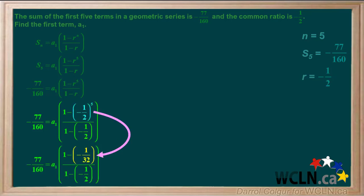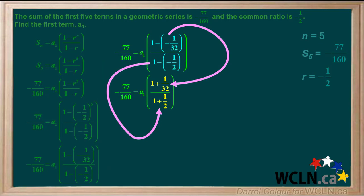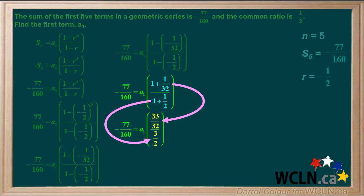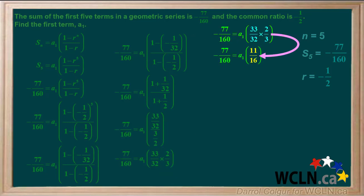Negative one-half to the fifth power is negative 1/32. Continuing the solution: 1 minus negative 1/32 equals 1 plus 1/32, and 1 minus negative one-half equals 1 plus one-half. So 1 plus 1/32 is 33/32, and 1 plus one-half is 3/2. Then 33/32 divided by 3/2 is the same as 33/32 times 2/3. Since 33 divided by 3 equals 11 and 32 divided by 2 equals 16, this reduces to 11/16.